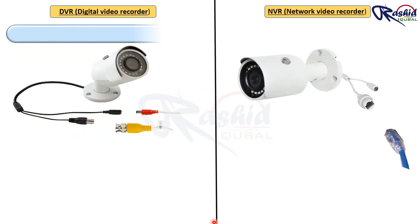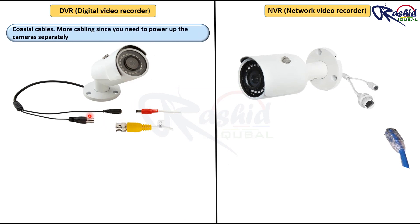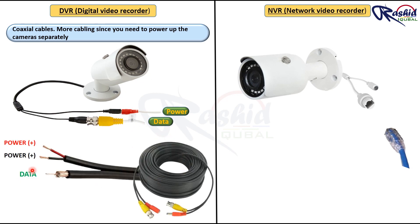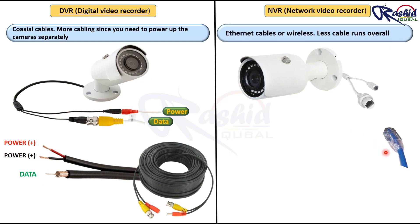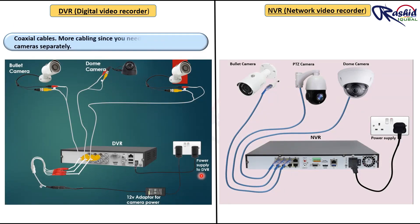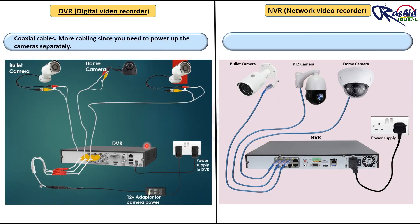For DVR, coaxial cable doesn't provide power to the camera. There are actually two cables included within one covering — a power cable and a video cable. These cables separate at each end to give separate functions. Therefore, you'll need to install your DVR near a power outlet, while Ethernet cable provides both data and power. Coaxial cable wiring requires more cabling, and the size and rigidity of coaxial cables make installation more of a challenge.